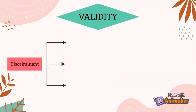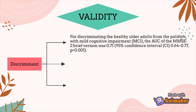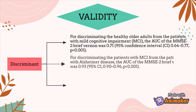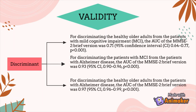Next is discriminant validity. For discriminating healthy older adults from patients with mild cognitive impairment (MCI), the AUC of the MMSE-2 brief version was 0.71. For discriminating patients with MCI from patients with Alzheimer's disease, the AUC was 0.93. For discriminating healthy older adults from patients with Alzheimer's disease, the AUC of the MMSE-2 brief version was 0.97.